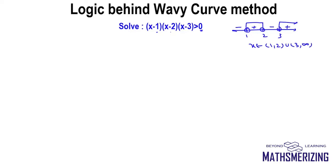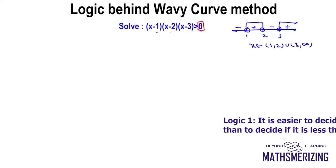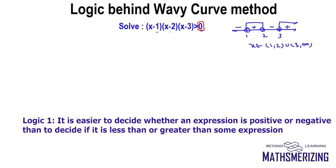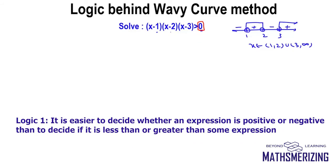Now we'll examine all five steps in the wavy curve method. The first step is: make the right hand side 0. The reason we do this is it'll be easy for us to decide whether the expression is positive or negative.